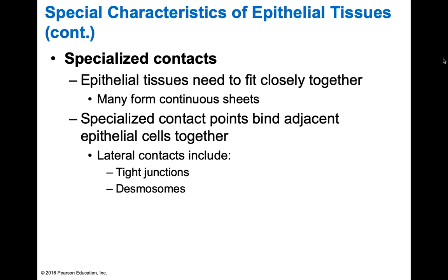Epithelial tissues also have specialized contacts. Some epithelial tissues need to fit very closely together to form a continuous sheet — think about your skin, there are no huge gaps. Specialized contact points bind adjacent epithelial cells together. We have lateral contacts including tight junctions and desmosomes, which we previously discussed when talking about cellular transport back in chapter three.